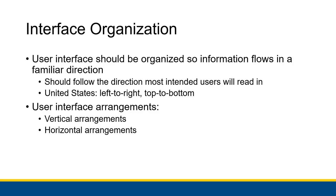User interfaces normally have a couple of main arrangement types. A vertical arrangement has columns of things the user interacts with — they start with the leftmost column going top to bottom, then the middle column, then the rightmost. A horizontal arrangement has rows of things the user interacts with, moving from one row to the next. Both arrangements present information in a way that users accustomed to reading left to right, top to bottom, will understand.